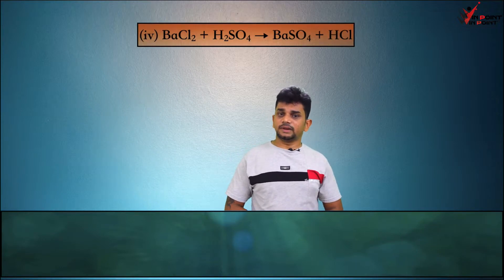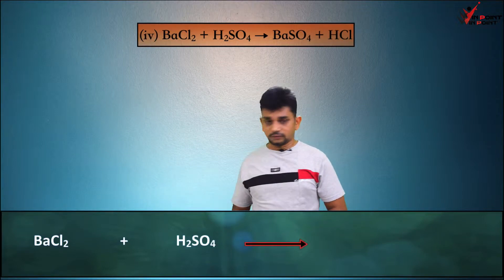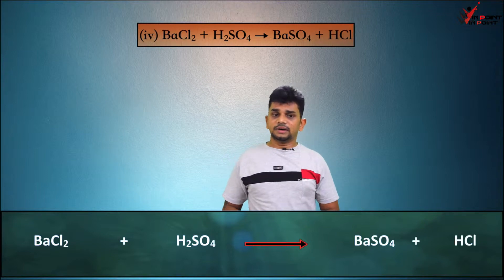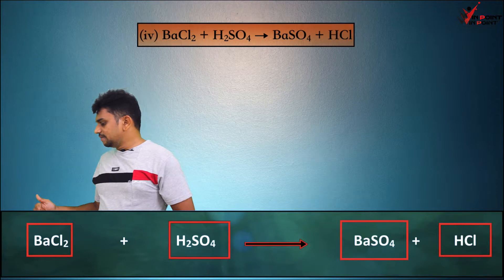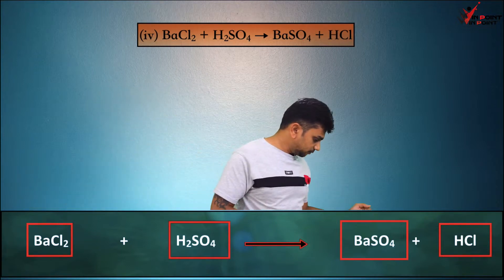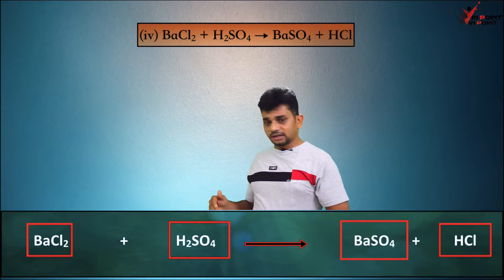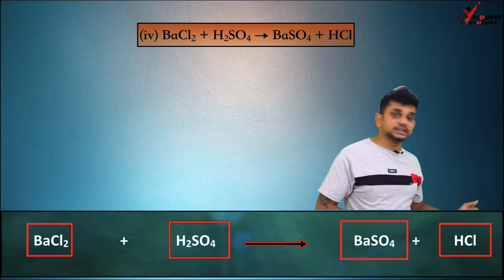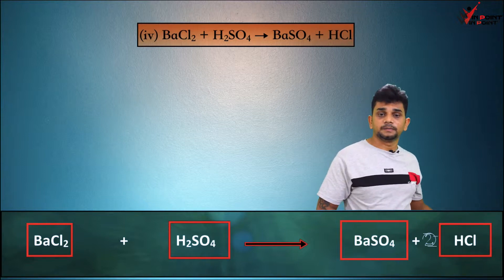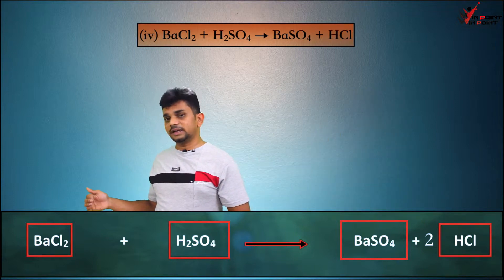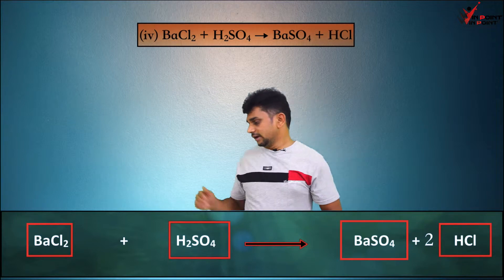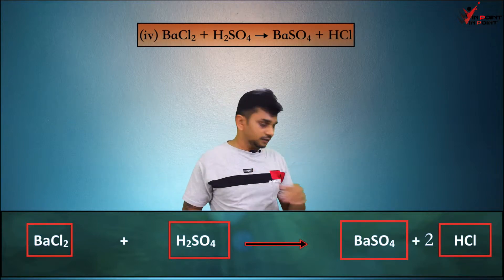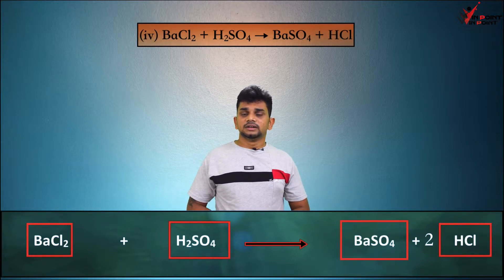Next: BaCl2 + H2SO4 → BaSO4 + HCl. Reactants are BaCl2 and H2SO4; products are BaSO4 and HCl. Barium: BaCl2 has 1 barium, BaSO4 has 1 barium — balanced. Hydrogen: H2SO4 has 2 hydrogen, HCl has 1 hydrogen, so we add a 2 to HCl. Now 2 HCl has 2 hydrogen — balanced. Chlorine: BaCl2 has 2 chlorine, 2 HCl has 2 chlorine — balanced. Sulfur: H2SO4 has 1 sulfur, BaSO4 has 1 sulfur — balanced. The balanced equation is BaCl2 + H2SO4 → BaSO4 + 2 HCl.